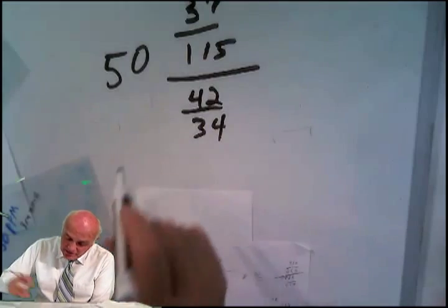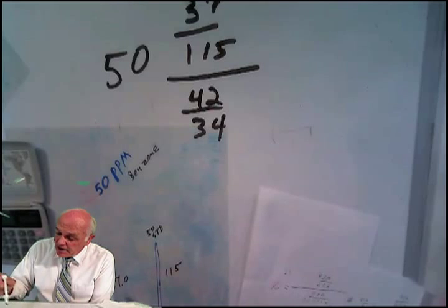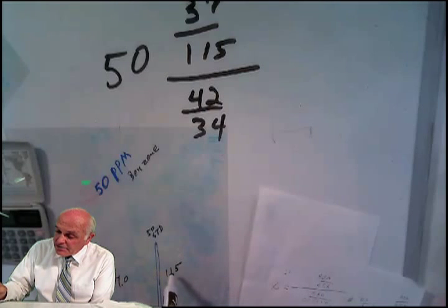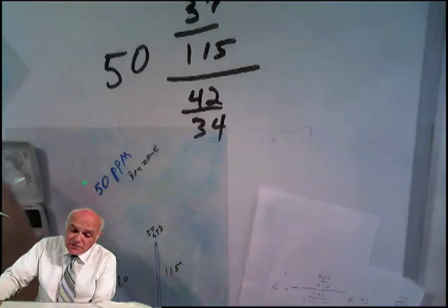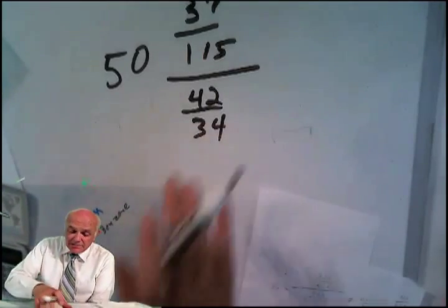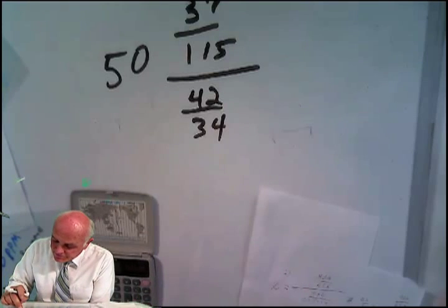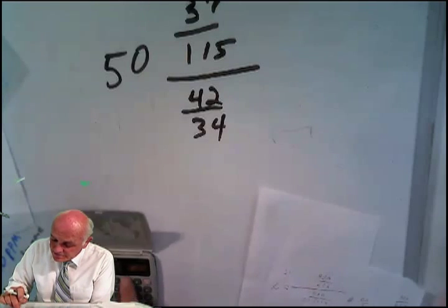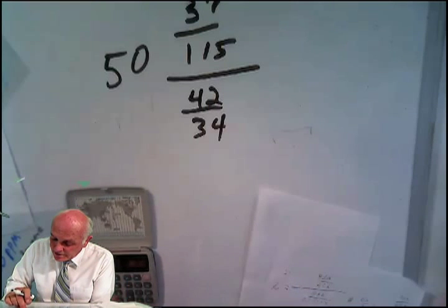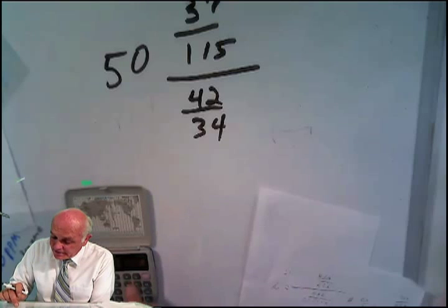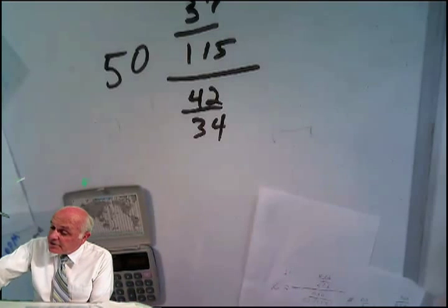So let's check it out. We've got 37 over the standard value of 115. We've got 42 over the unknown value of 34. That looks pretty good. Let's go ahead and calculate this: 50 times 37 times 34 divided by 115 divided by 42, and we get 13.0.